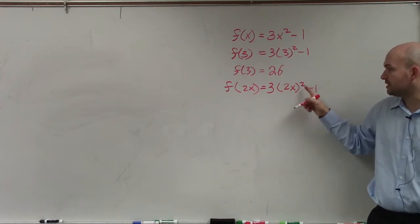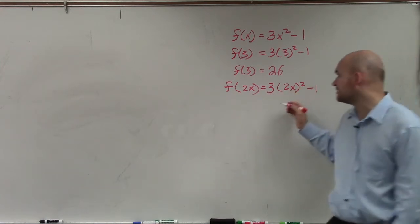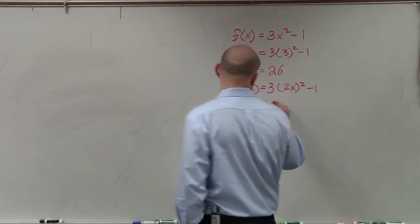So I take 2x, I square it, which gives me 4x squared, multiply that by 3. Let's just do this in part.